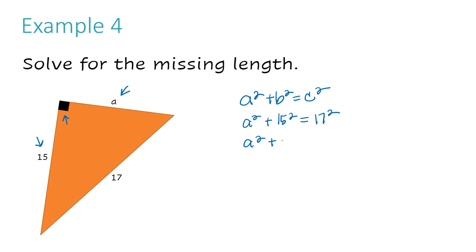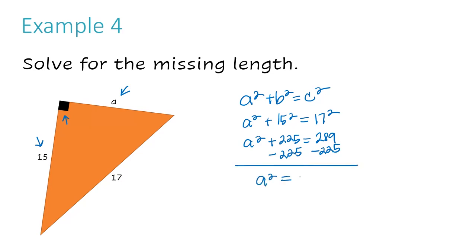A squared plus 15 times 15 is 225, equals 17 times 17 which is 289. Now I need to solve for A — get A on one side by itself. There's a squared exponent and a plus 225 with the A. Using inverse operations, since the problem adds 225, I subtract 225 from both sides. Minus 225 on both sides.